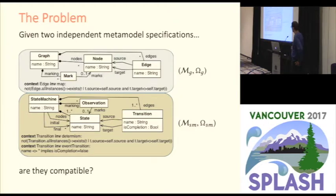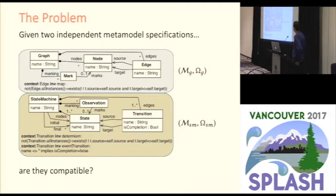In the second metamodel we have the definition of state machines, where states can be observed, and we have a constraint that defines that only those state machines that are deterministic are valid in this metamodel. The question we want to address is: are these two metamodels compatible? Are we going to be able to use state machines wherever a graph conforming to this metamodel specification is used?